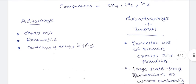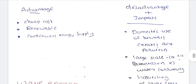Domestic use of biomass creates air pollution. The process also produces hydrogen sulfide (H2S).